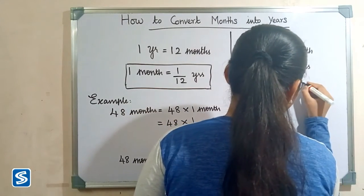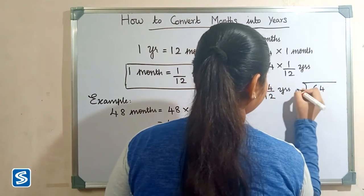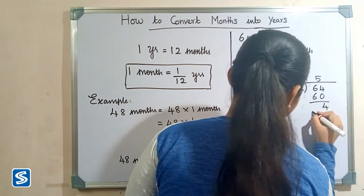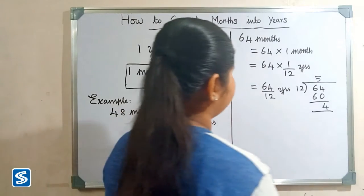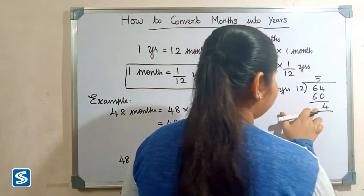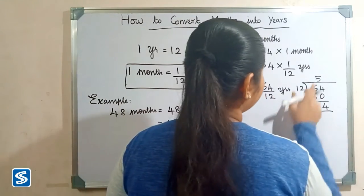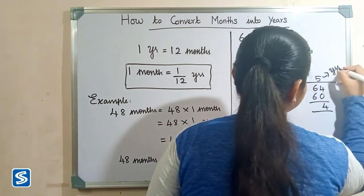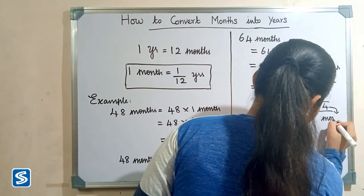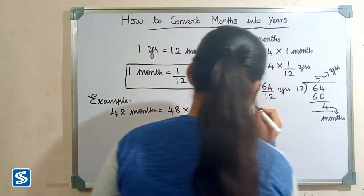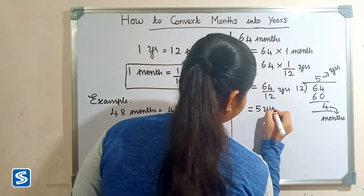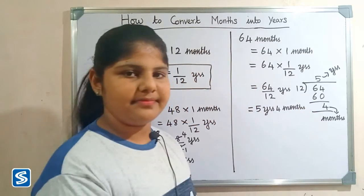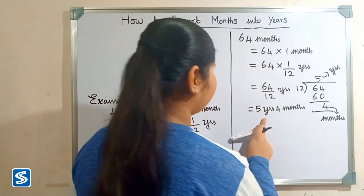Let us divide it. When we divide, we have to consider the quotient as years and remainder as months. Here the quotient is 5 and the remainder is 4. So our answer will be 5 years 4 months. Therefore, 64 months is equal to 5 years 4 months.